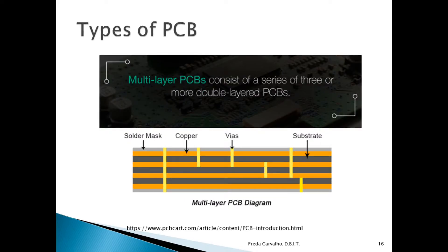Here now is a multi-layer PCB consisting of a series of three or more double-layered PCBs. Multi-layer PCBs come in a variety of sizes going as small as 4 layers or as large as 10 or 12. The largest multi-layer PCB ever built was 50 layers thick.